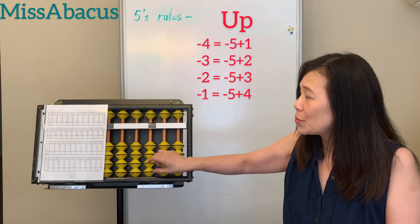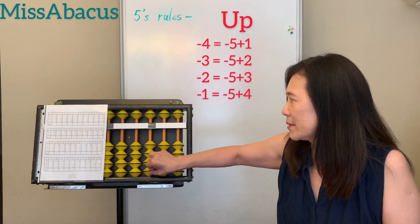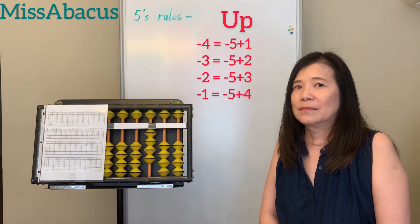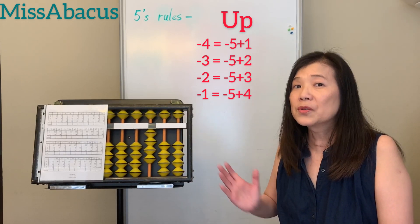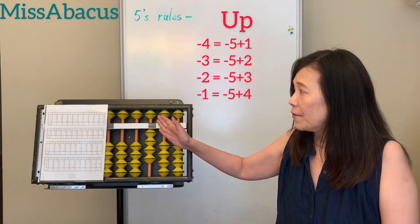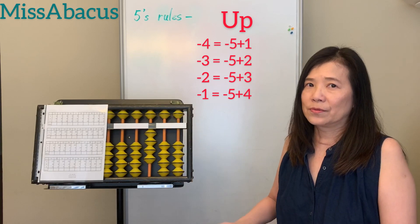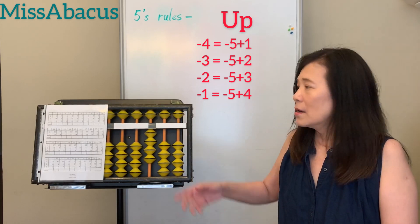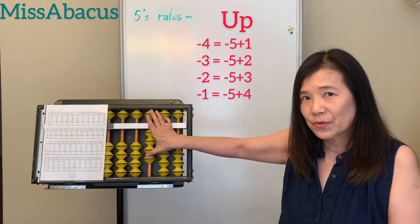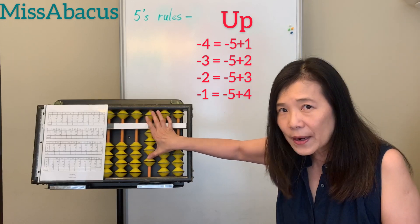Let me show you how to apply the 5's rules. For example, 4 plus 4 — plus 4 we learned last week. So we check the 5's first. If you have 5, use the 5's rules. So for the 4, it's 5 minus 1, remember? So down 5 only.